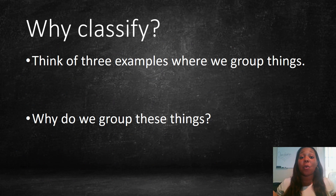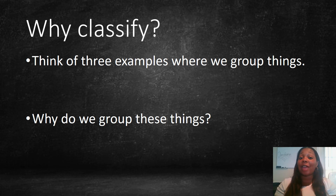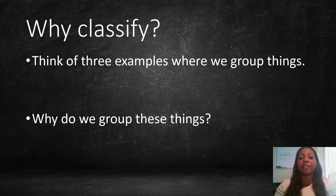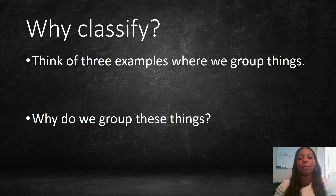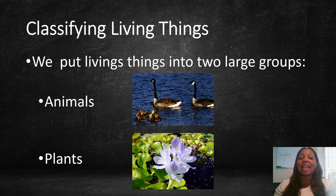You may be asking, why classify? I want you to think of three examples where we group things. If I look around my house, I could group things by color, I could group people by age, and I could group the rooms by the activities that we complete in them — sleeping, family time, and getting ready for school. We group things to keep them in order. When classifying living things, we put them into two large groups: animals and plants.